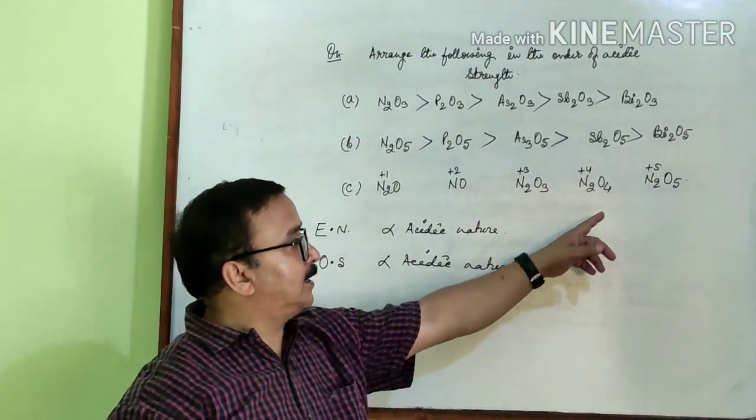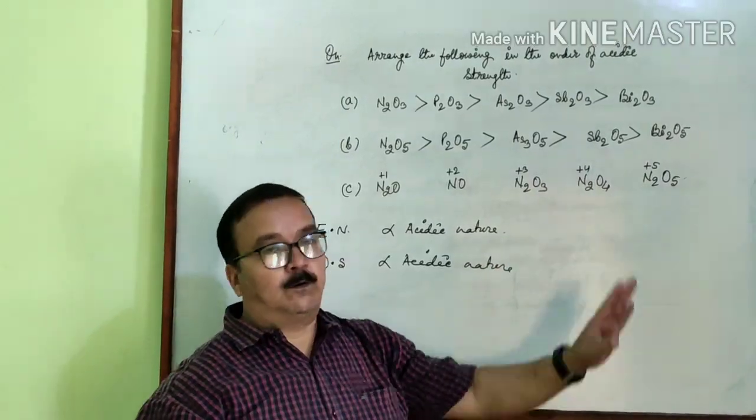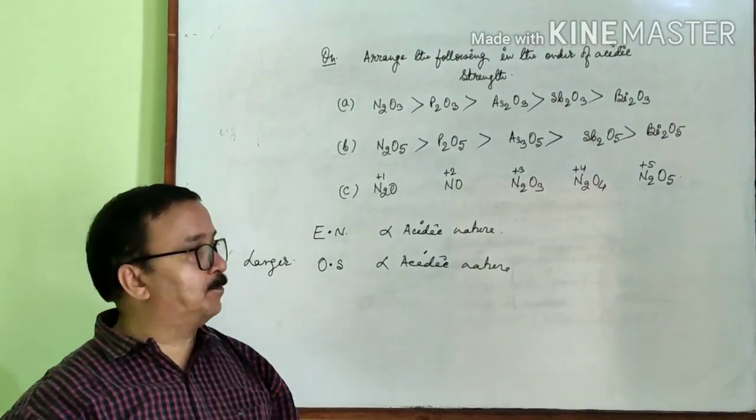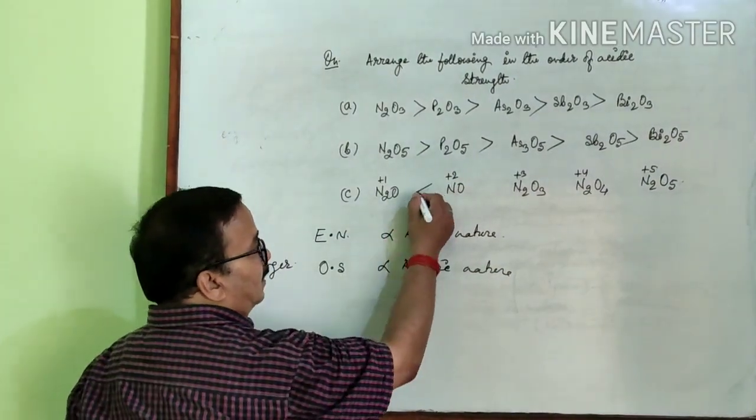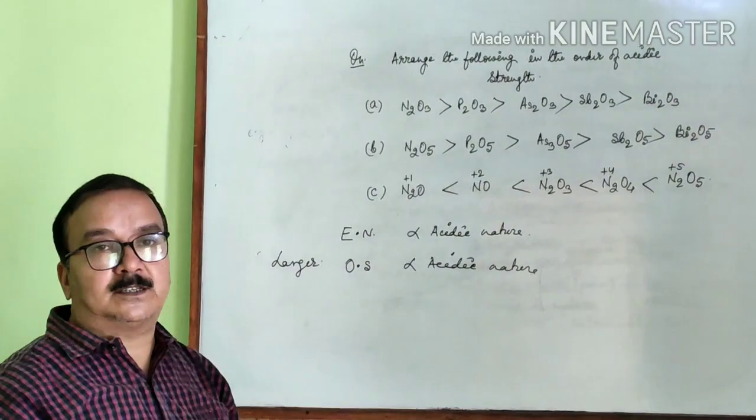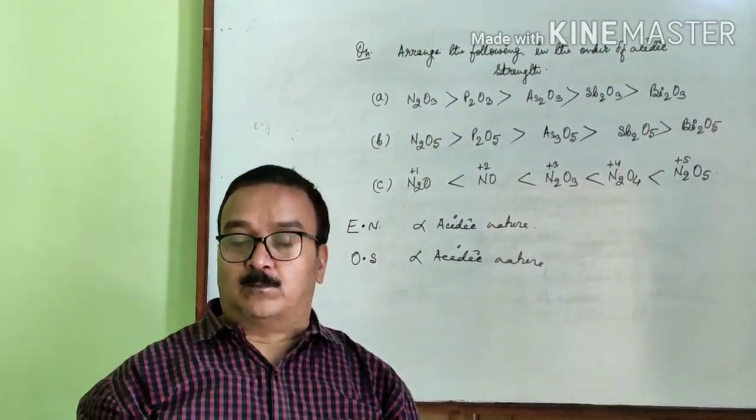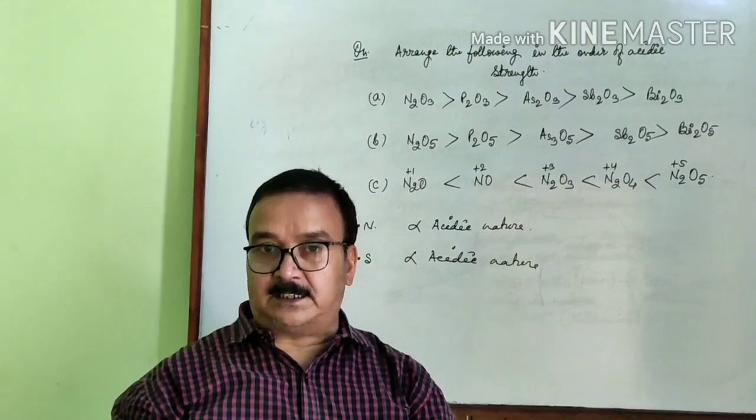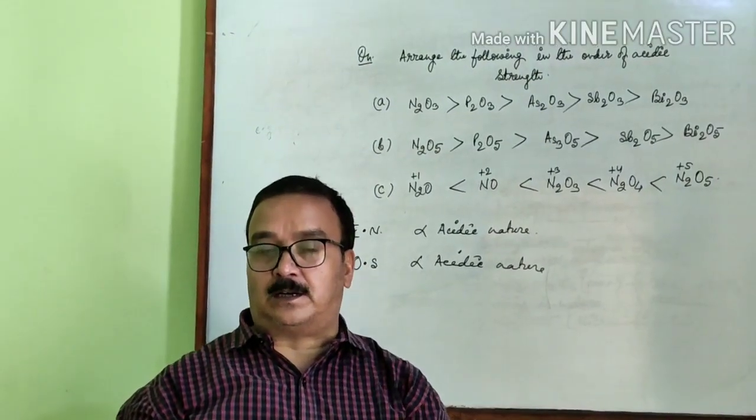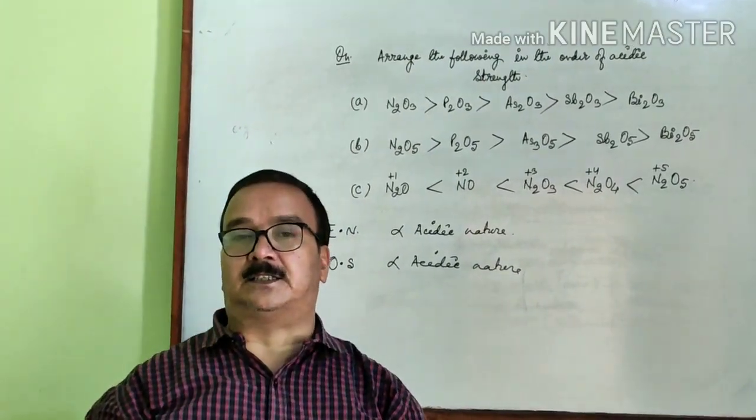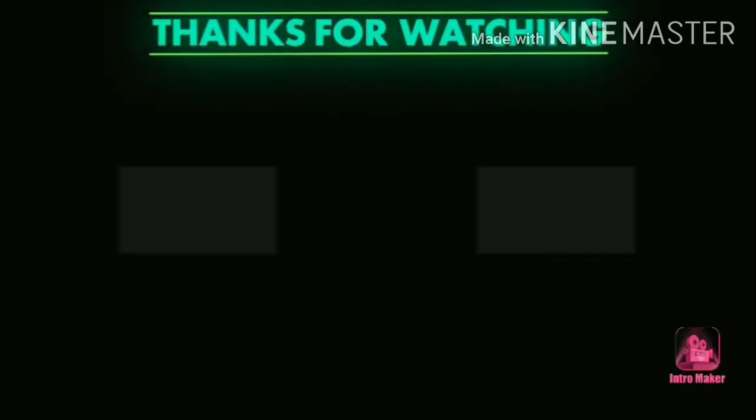Then we can say that in N2O5 oxidation state of nitrogen is maximum, therefore it is most acidic in nature. Why is it most acidic? Because higher the oxidation state, more tendency to attract the electron cloud of oxygen towards itself, and more will be the acidic nature.